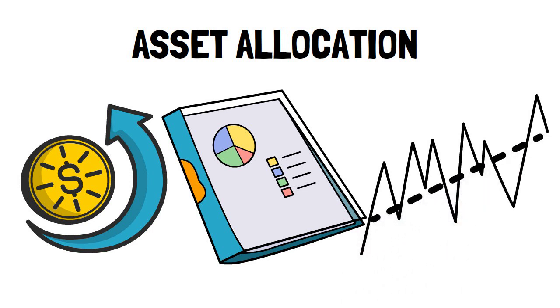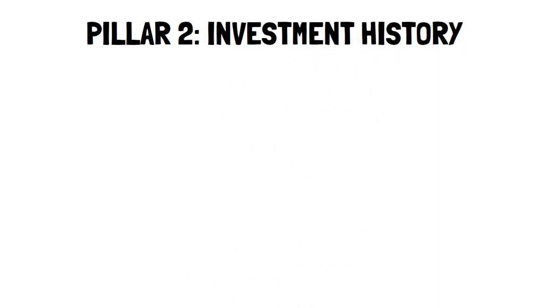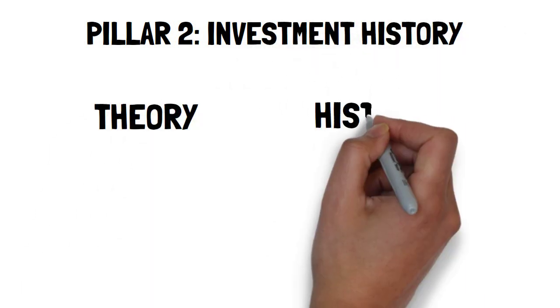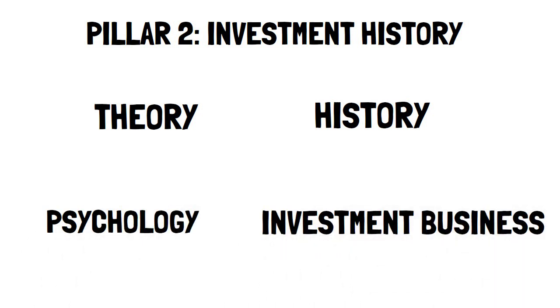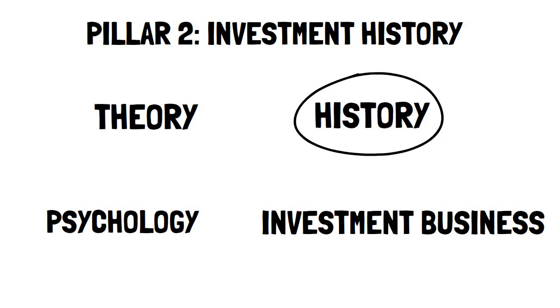Buying the whole market through a low-cost index fund is the best way to utilize the available market intelligence and information. Pillar 2: Investment History. Over the four key areas of investing—theory, history, psychology, and investment industry practices—the lack of historical knowledge is the one that causes the most damage.